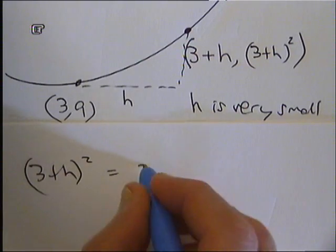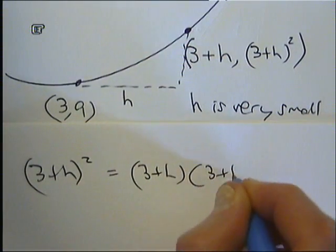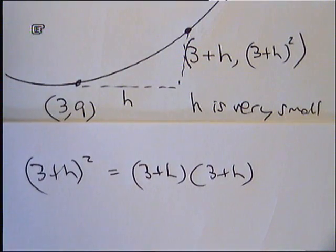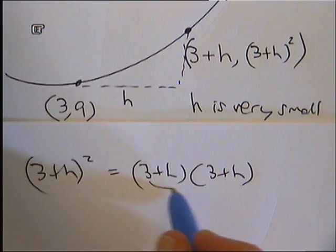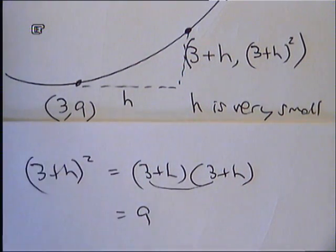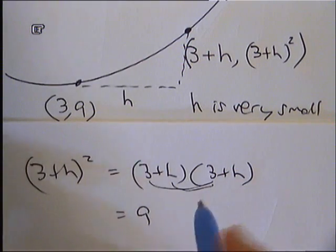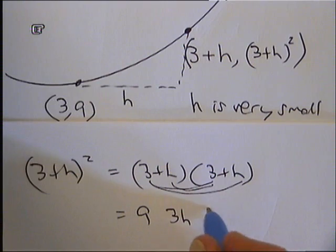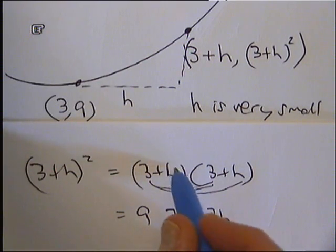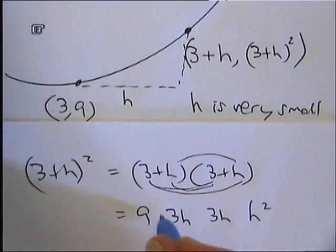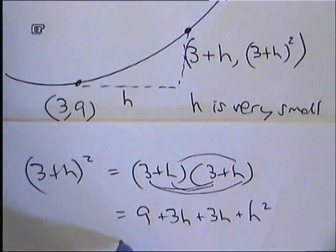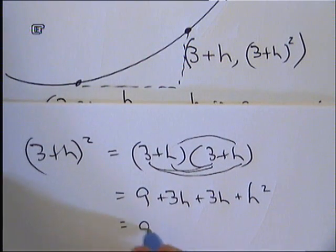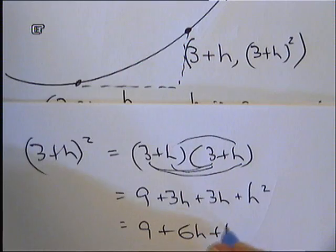So that's 3 plus h multiplied by 3 plus h. Whichever technique you use to do this when you multiply it out, you should be doing a 3 times by a 3, which is a 9, an h times by a 3, which is a 3h, a 3 times by an h, which is another 3h, and an h times by an h, which is an h squared. They're all being added together. So you should be getting there 9 plus 6h plus h squared.